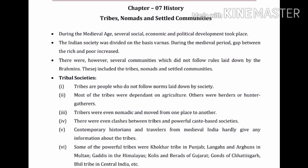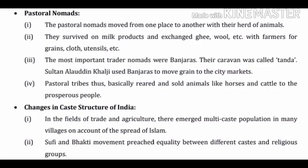Point four: there were even clashes between tribes and powerful caste-based societies. Point five: contemporary historians and travelers from medieval India hardly gave any information about the tribes. Point six: some of the powerful tribes were the Kokhar tribe in Punjab, Langas and Arghuns in Multan, Gaddis in the Himalayas, Colis and Bhils of Gujarat, Gonds of Chhattisgarh, Bhil tribe in central India, etc.